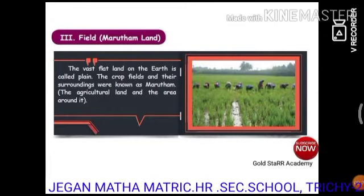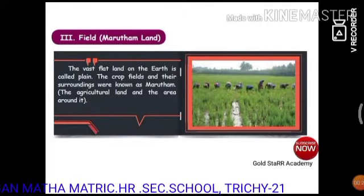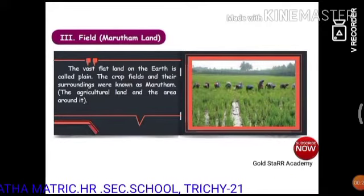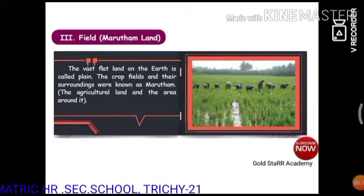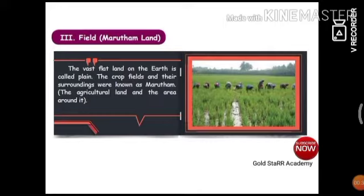The flatland on the earth is called a plain. The crop fields and their surroundings were known as Marudam — the agricultural land and the area around it. Students, you can see the picture.